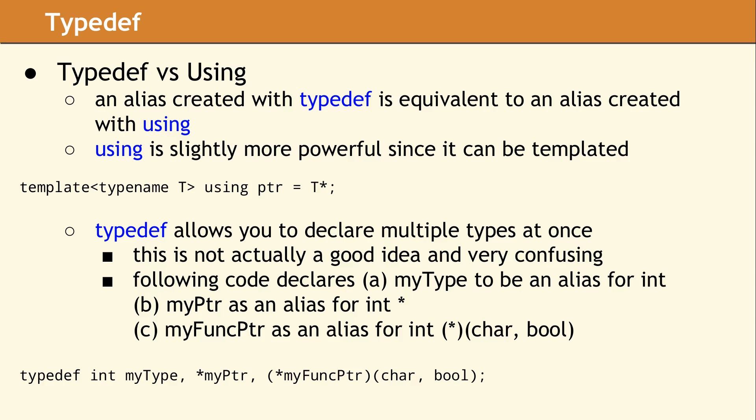An odd and maybe not often used syntax exists for a typedef, which is not allowed for the using keyword. You can declare multiple type aliases in one statement. This is actually very confusing syntax, but it is legal. It is no longer considered a good practice, so you shouldn't really do this.